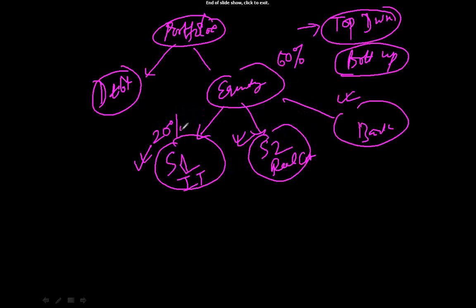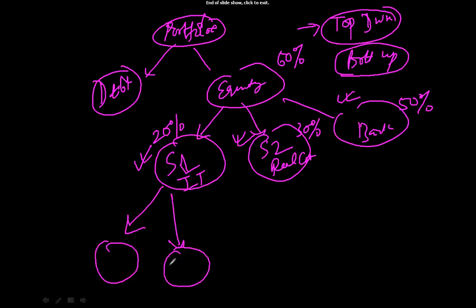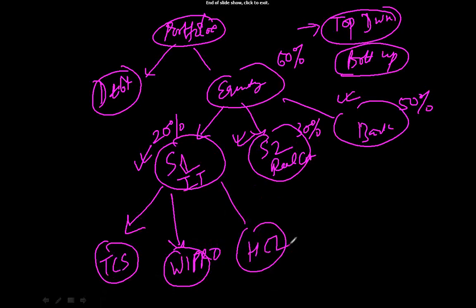With 60% in equity, you might say: 20% in IT, 30% in real estate, and 50% in banking, because you believe these sectors will outperform others. Once you have identified the sectors, you find which individual securities are attractive within each sector. For example, in the IT sector you might invest in TCS, Wipro, and HCL — allocating 30% to TCS, 20% to Wipro, and 50% to HCL within the IT allocation.